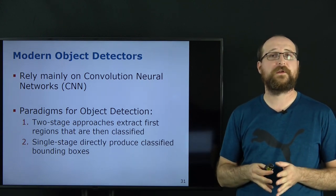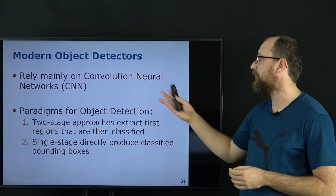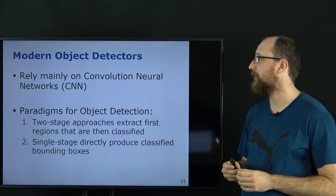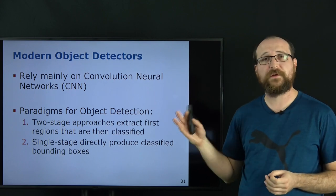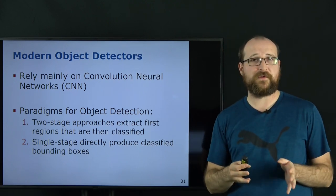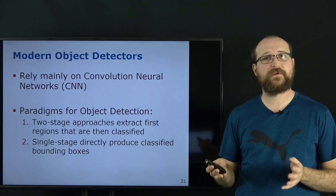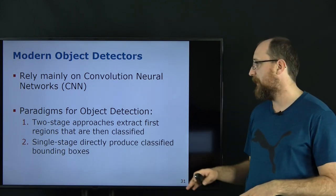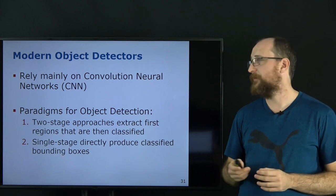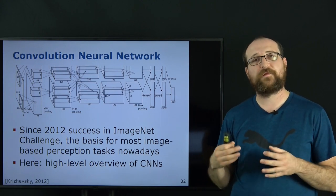This lecture focuses on modern object detectors, which rely on convolutional neural networks (CNNs) to get better features and better classification. There are two basic paradigms: two-stage approaches, which first extract region proposals and then classify each region (proposal phase then classification phase); and single-stage approaches, which directly produce bounding boxes without an intermediate region extraction step. Before covering these, we need to understand convolutional neural networks.